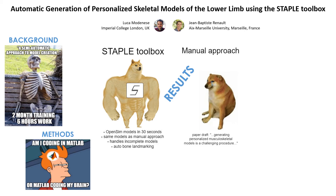The joint moments, on the other hand, differed on part of the swing phase because of the differences in shank mass estimation — results consistent with findings in the literature.